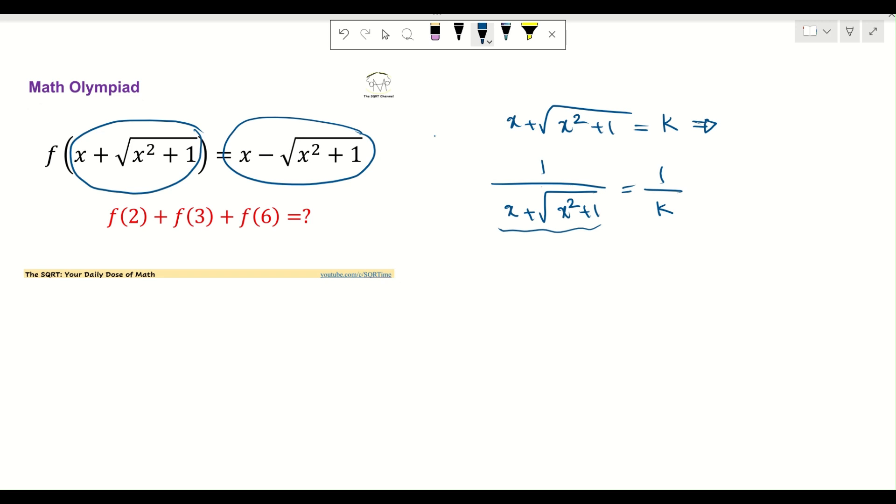And now we are going to see that I can simplify the left hand side and write it as (x - √(x² + 1)) over (x + √(x² + 1)) times (x - √(x² + 1)) equals 1/k.